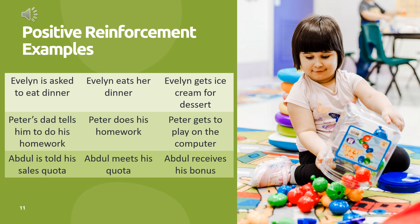Here are positive reinforcement examples where something is added that increases the likelihood the behavior will occur again. If Evelyn is asked to eat dinner and she eats her dinner, she gets ice cream for dessert — increasing the likelihood she'll eat dinner again. When Peter's dad tells him to do his homework and he does it, Peter gets to play on the computer. If Abdul meets his sales quota, he receives a bonus and is likely to try to meet that quota again.